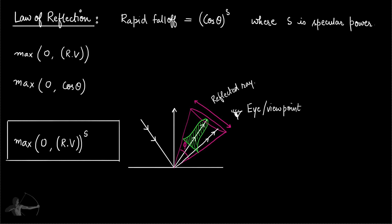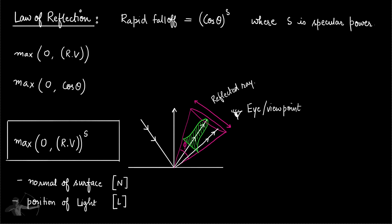This will be the equation for specular reflection. In a shader, what we have available is the normal n, the position of light l, and the position of the camera which is vector v. What we don't have is r, so we will have to calculate r based on the light vector, since the direction of the incident ray is the light vector — the position of light from the point on the surface.